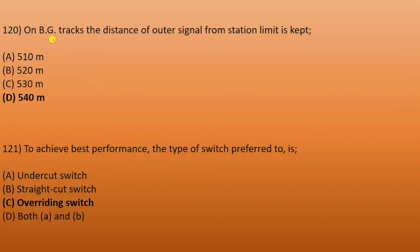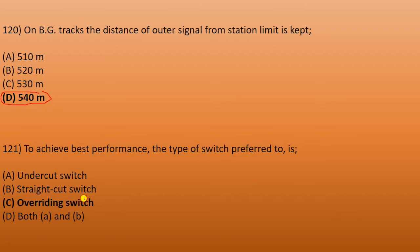Next: on BG track, the distance of the outer signal from the station limit is kept at 540 meters. Next: to achieve best performance, the type of switch preferred is the overriding switch. The overriding switch is used in turnouts, crossings, or shunting situations — the overriding switch is the best switch.